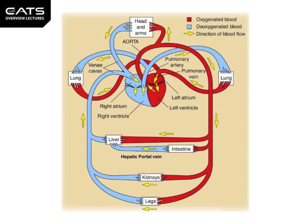Having left the lungs, the blood travels via a pulmonary vein from the tissue or organ. You can think: vein, a four-letter word, meaning 'from'. Once again, whether the blood is oxygenated or deoxygenated will depend upon what the tissue or organ is doing.